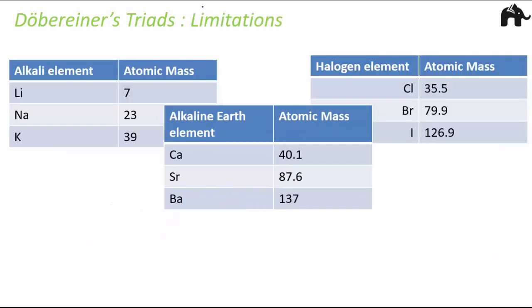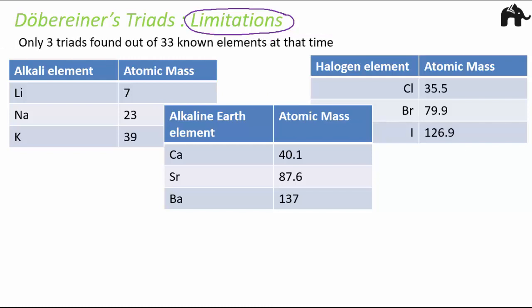There were certain limitations of Döbereiner's triads. At that time, there were 33 elements known in total. Out of those 33 elements, only three triads were found — meaning only 9 elements were part of Döbereiner's triads. The remaining elements did not fall into this category. So only a few triads were found and all elements were not covered by Döbereiner's triad law. That was a major limitation, which proved that the law was not universally valid.